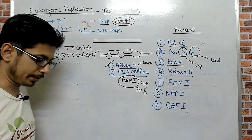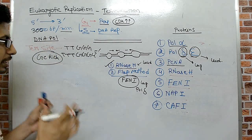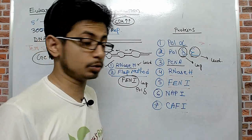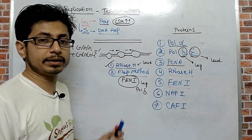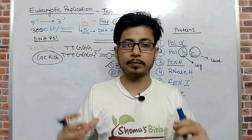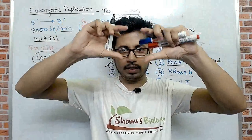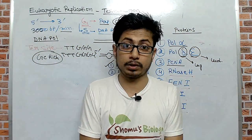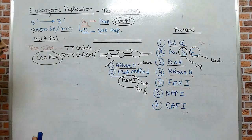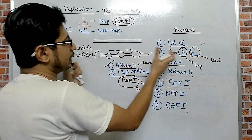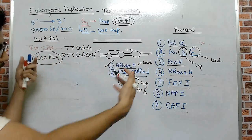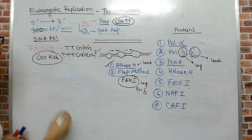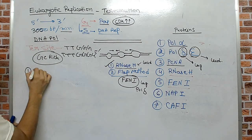The termination site is where the DNA replication process ends. However, in eukaryotic DNA replication there is no defined meeting point like in prokaryotes, where two replication forks move in opposite directions, meet at a point, and stop. In eukaryotes, multiple replication bubbles move toward each other and complete the process, but two things are very important: the end replication problem and the protection of the DNA telomere.